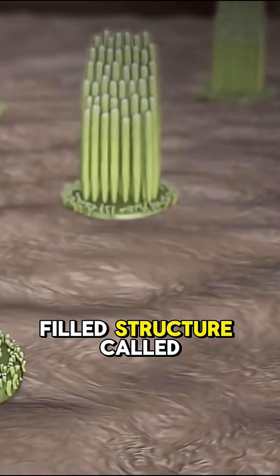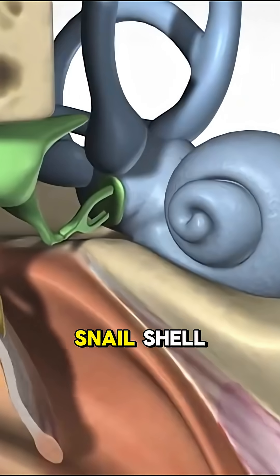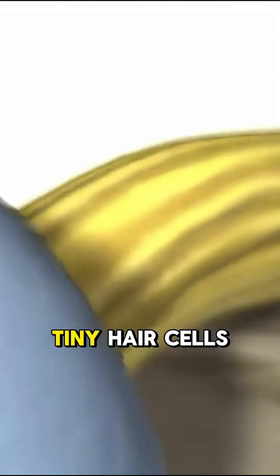Inside a fluid-filled structure called the cochlea, shaped like a snail shell, are thousands of tiny hair cells.